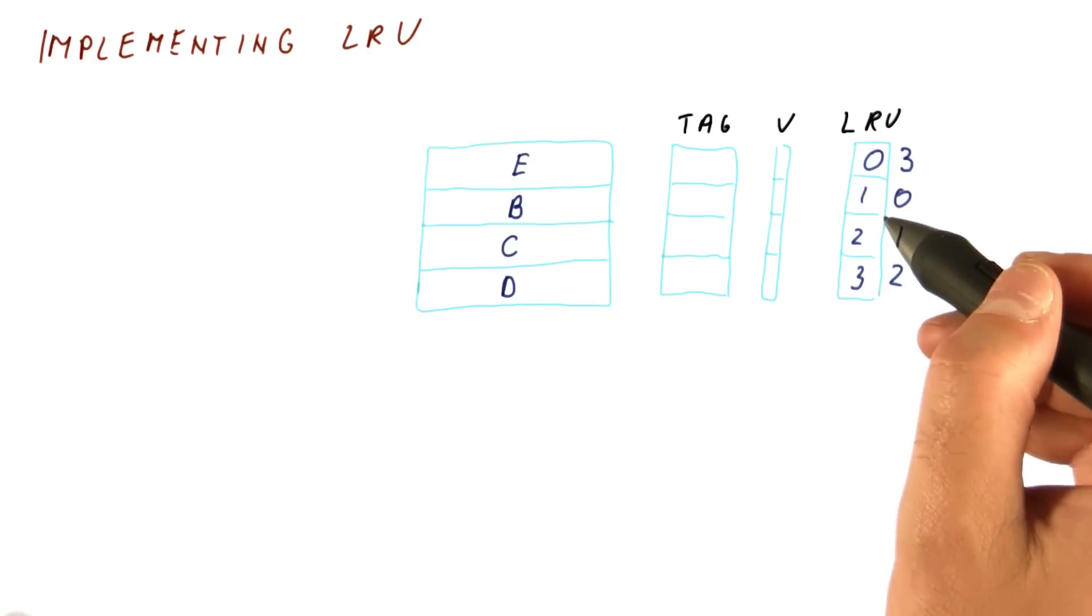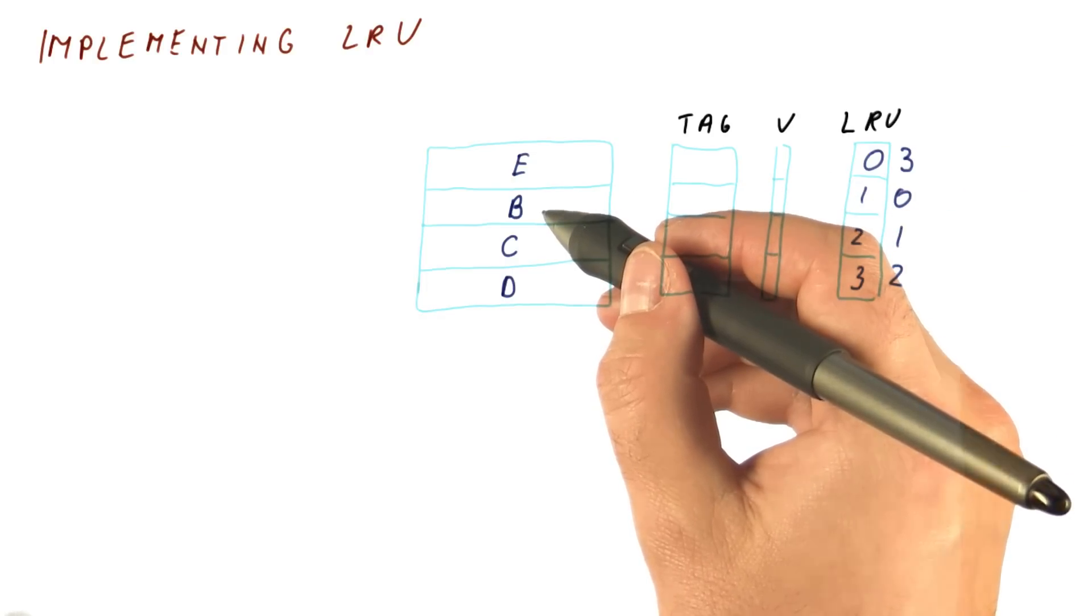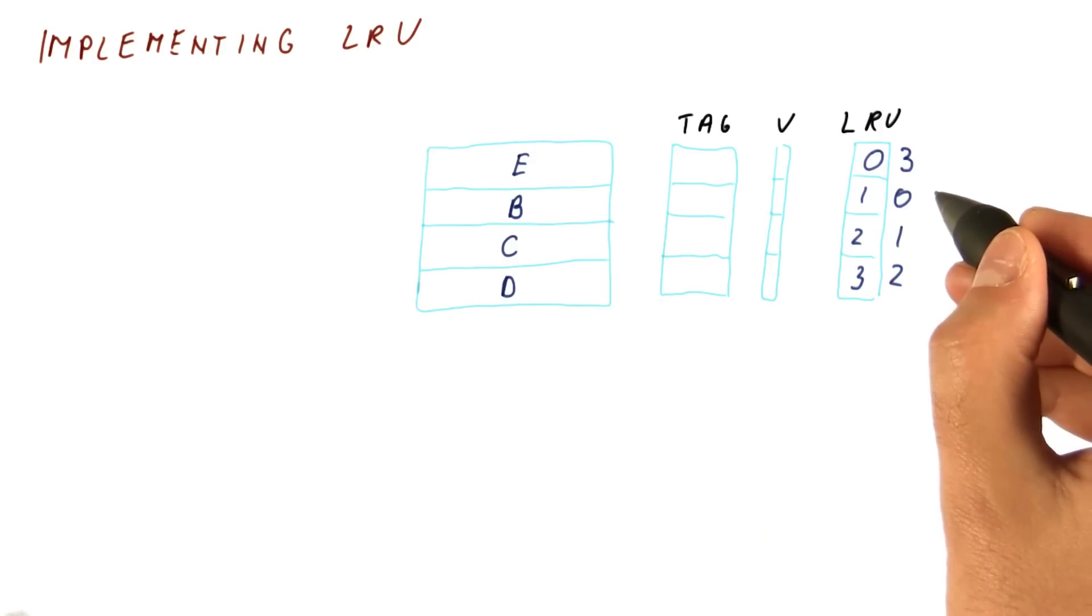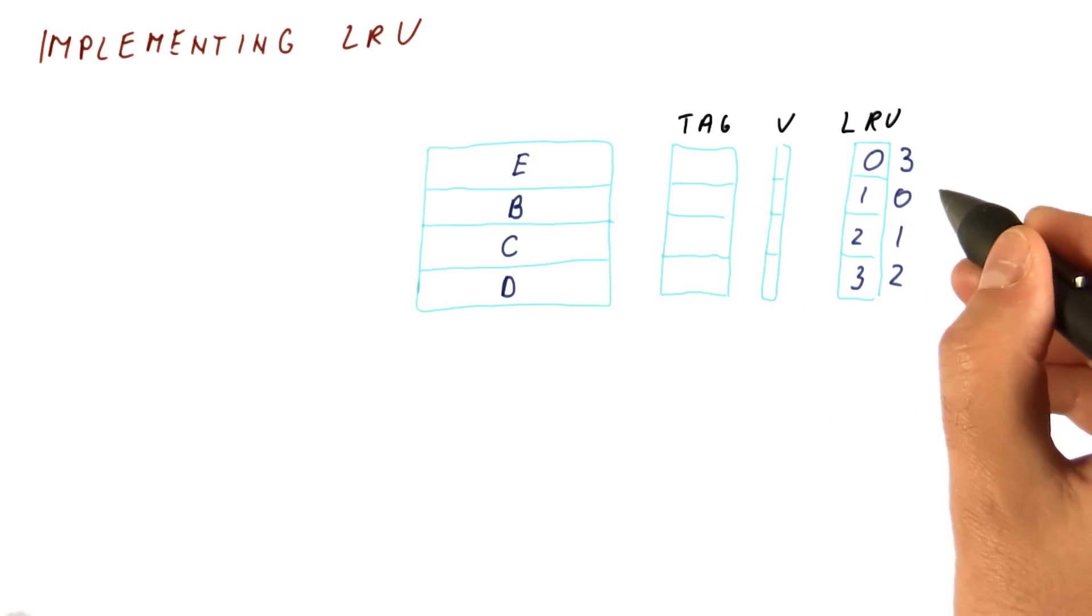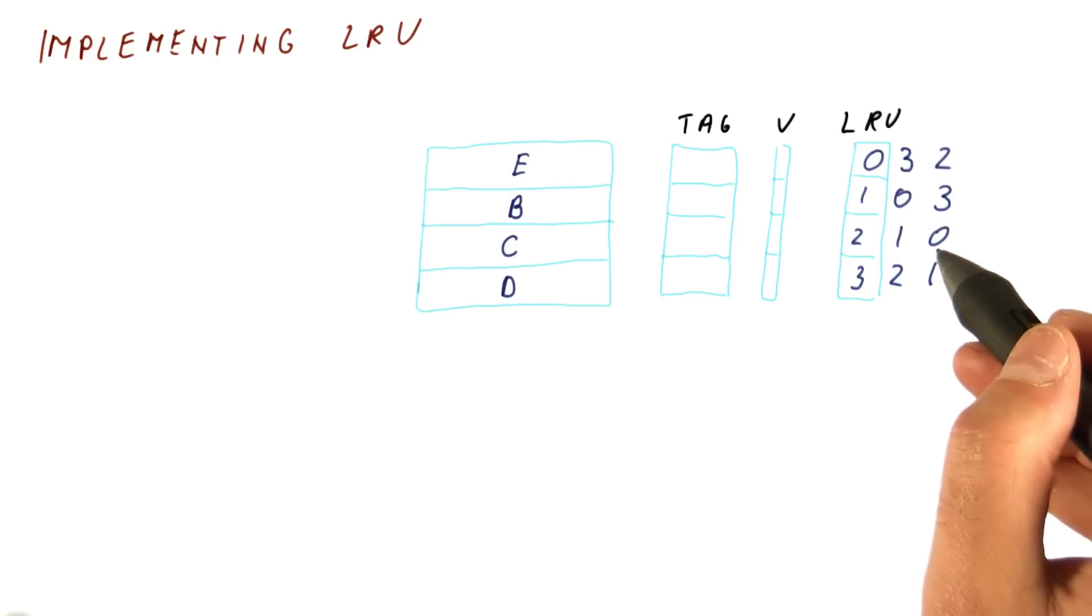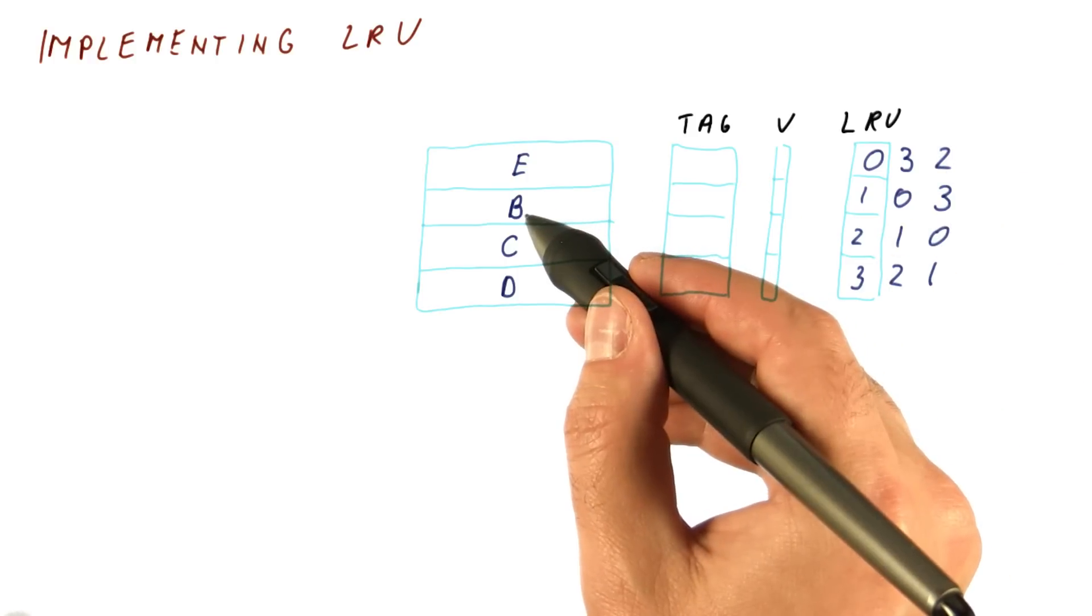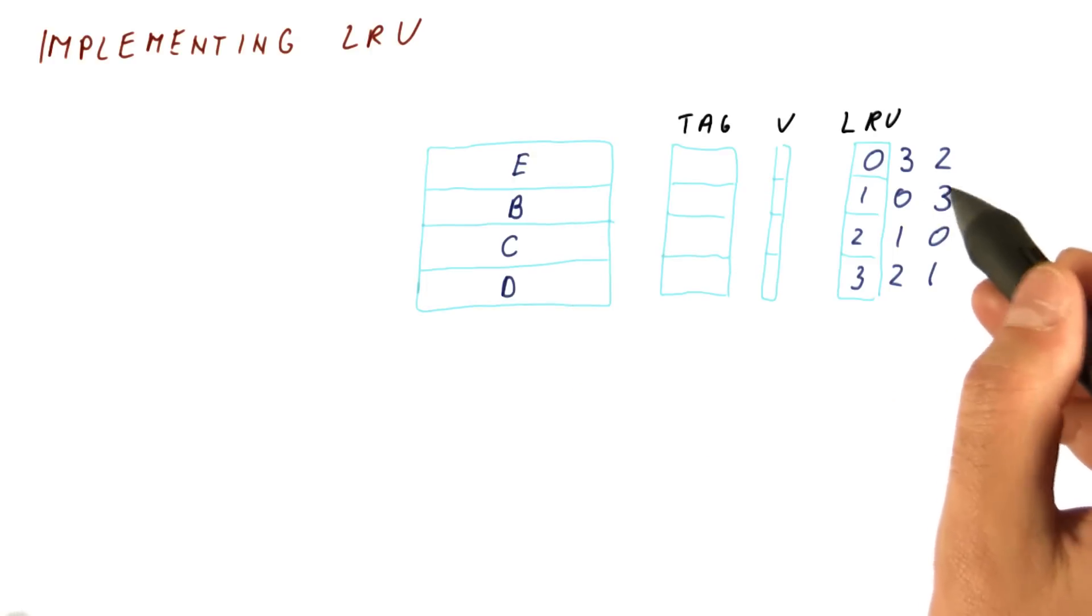Now let's say that B, which is the least recently used block now, is re-accessed. What happens then is this counter needs to become 3. All of the other ones now need to be changed lower. What happens if the most recently used block, let's say B, is accessed again? Then this counter just stays at 3 because that indicates this is already the most recently accessed block.